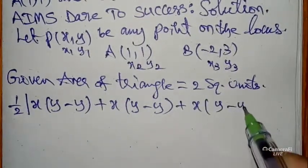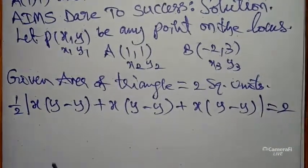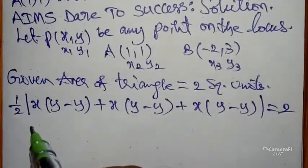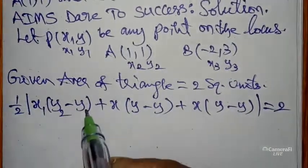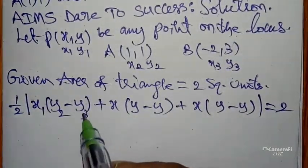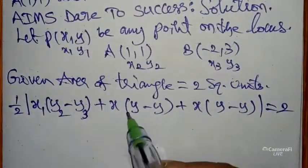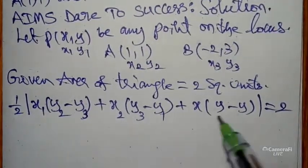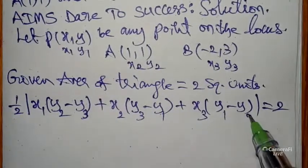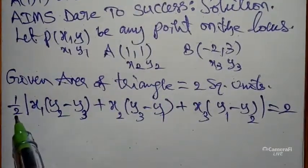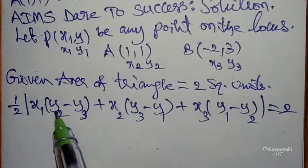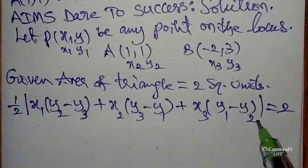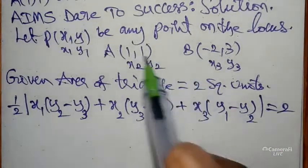After that you can write continuation numbers 1, 2, 3. Next you can write sequence 2, 3, 1, 2. It is our area of the triangle formula: 1/2 into mod x₁(y₂ - y₃) + x₂(y₃ - y₁) + x₃(y₁ - y₂) equals the given value 2.